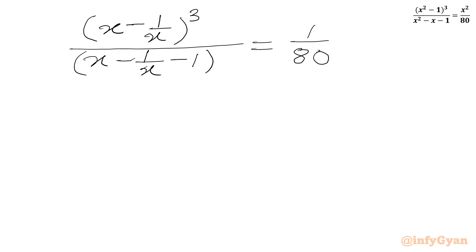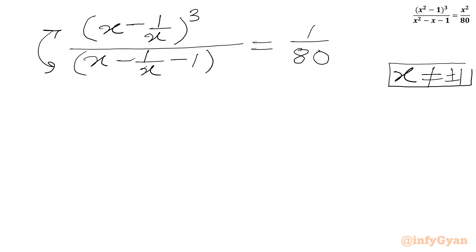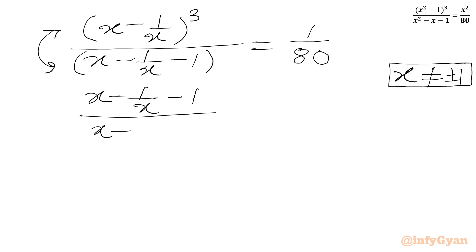Now I will flip our numerator and denominator. Since x cannot be equal to plus or minus 1, I can take the reciprocal of both sides. So I can write x minus 1 over x, equal to 8.